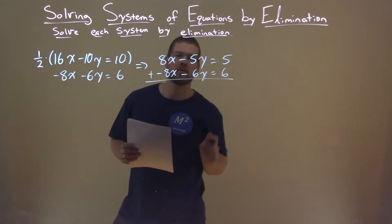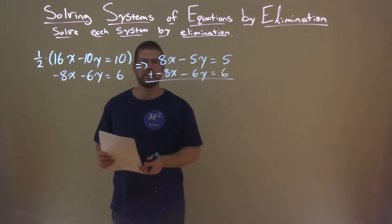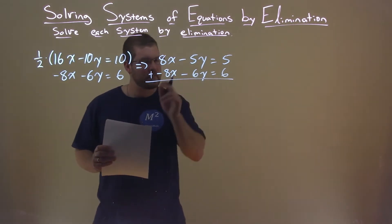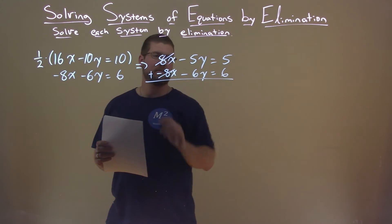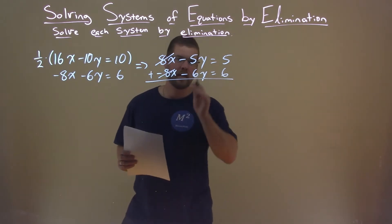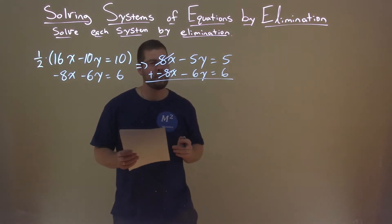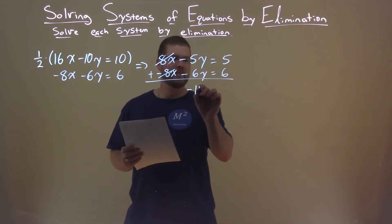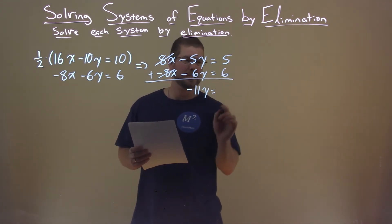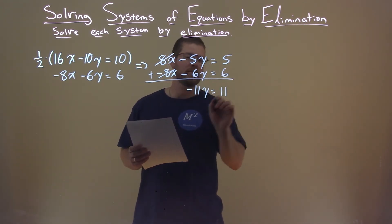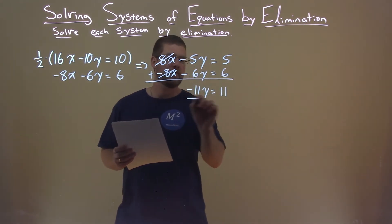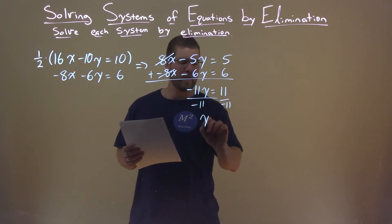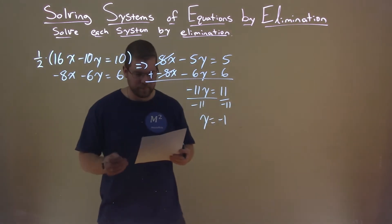Add the two equations together and see what happens. 8x plus negative 8x cancels out. Negative 5y plus negative 6y is negative 11y, and 5 plus 6 is positive 11. Divide both sides by negative 11, and y by itself equals negative 1.